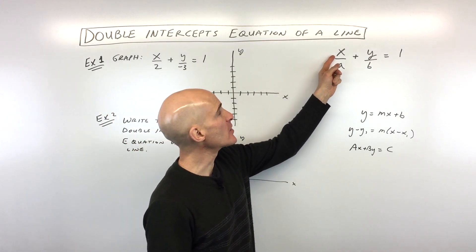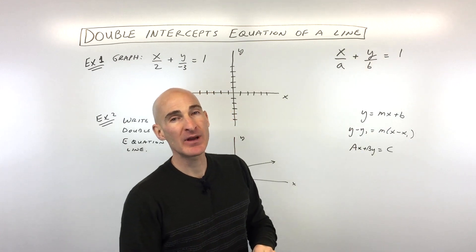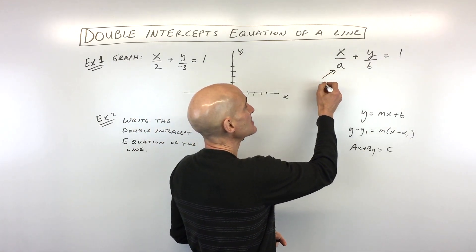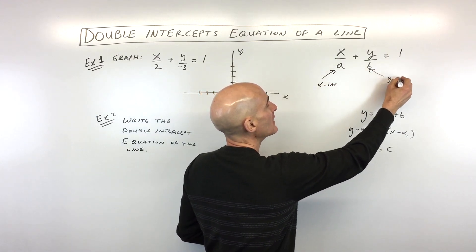The equation we're going to be working with is this one here, x over a plus y over b equals 1. And basically the way that this works is that a is our x-intercept and b is our y-intercept.